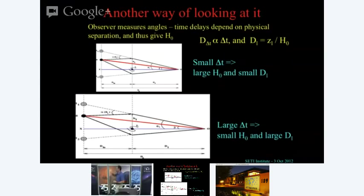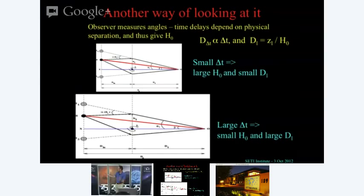The time delay distance is proportional to the time delay and proportional to 1 over the Hubble constant. If you have a small time delay for a given angle, the Hubble constant is large and distances are small; conversely, if the time delay is large, the Hubble constant is small and distances are large. When we look out we see everything in terms of angles, and the time delay is what allows us to convert those angles into physical sizes.